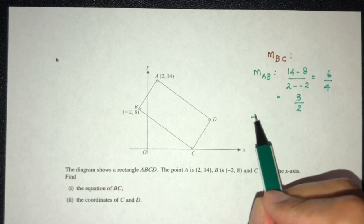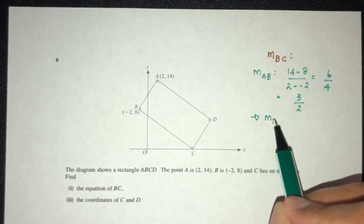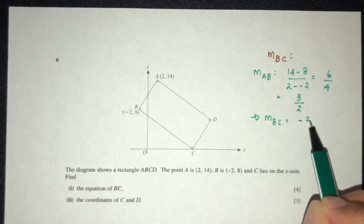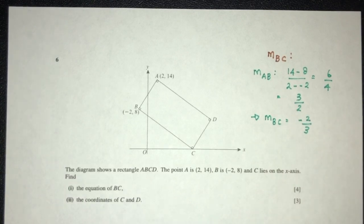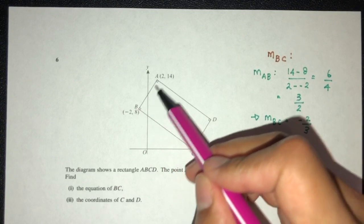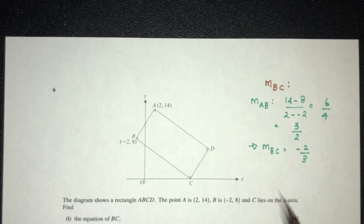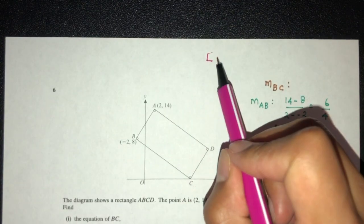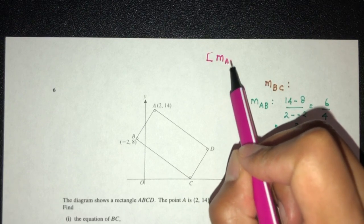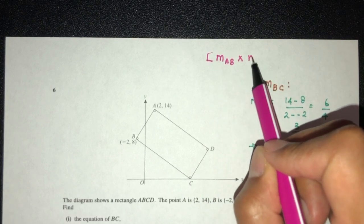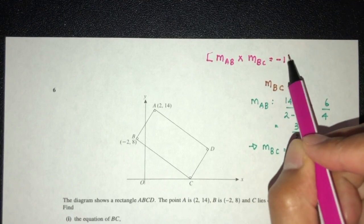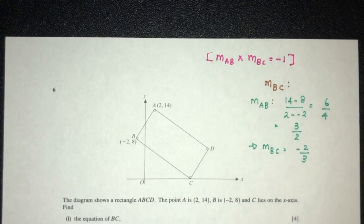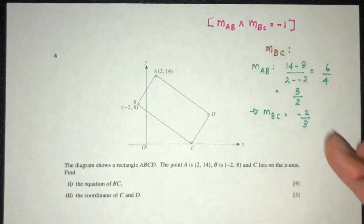Now from this, we can derive the gradient of BC, and that should be minus 2 over 3. Because whenever we have two lines which are perpendicular to each other, we can understand that the relationship should be gradient of AB multiplied by the gradient of BC gives you the value of minus 1. So because of that relationship, if you find one of them, you can derive the other one.